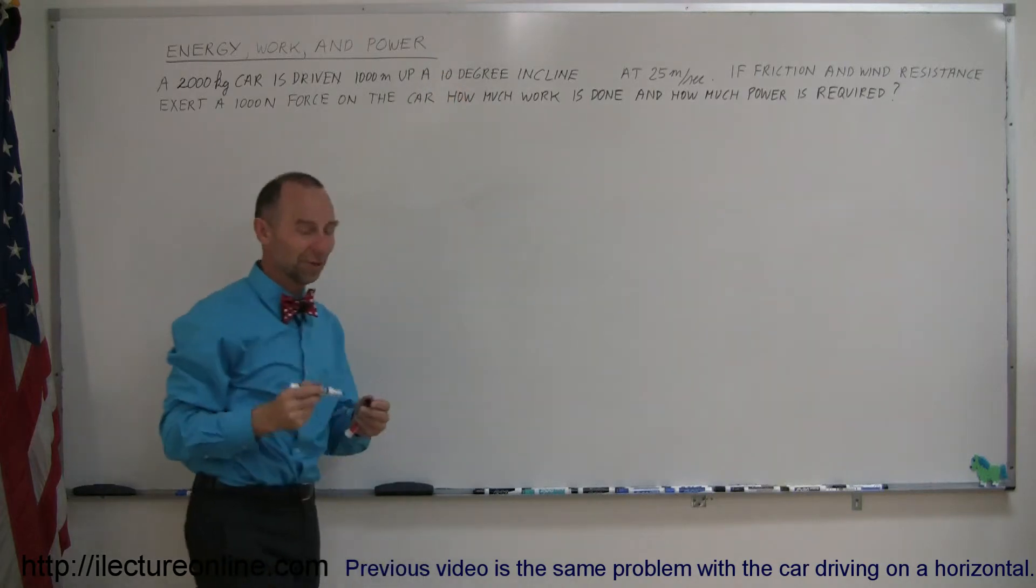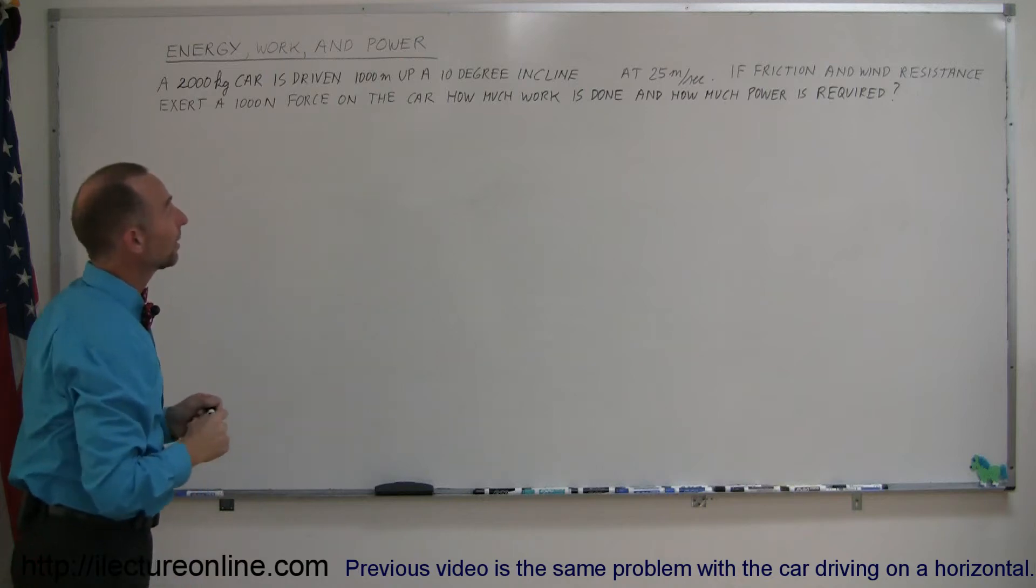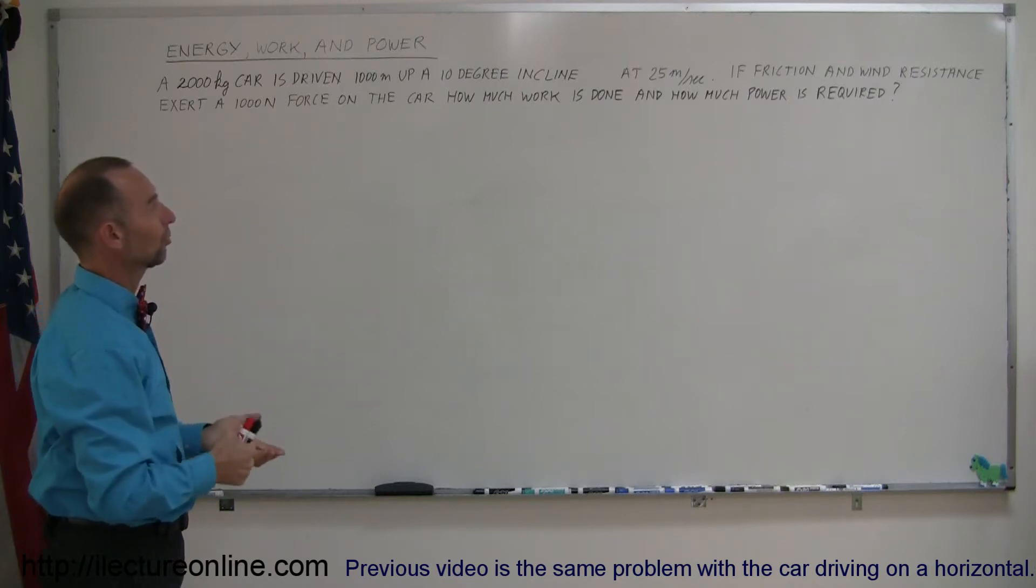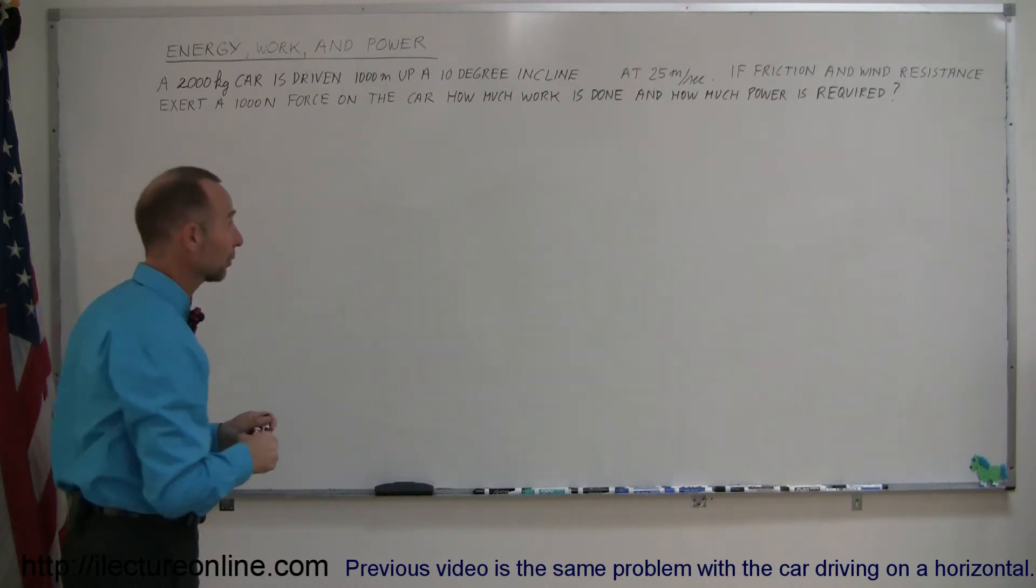That seems a little bit more reasonable. 10 degree incline at 25 meters per second. If friction and wind resistance exert a 1,000 Newton force on the car, how much work is done, and how much power is required to do this.